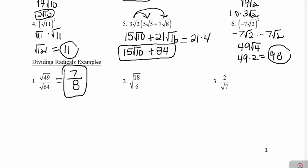With number 2, I have a fraction underneath the square root. First I'm going to look to see if I can simplify that fraction, and actually you can, because 18 is divisible by 6. And 18 divided by 6 is equal to 3. So that would be the same thing as the square root of 3, and we can't simplify the square root of 3 any further, so that's the final answer.